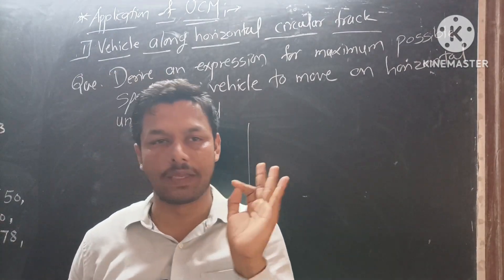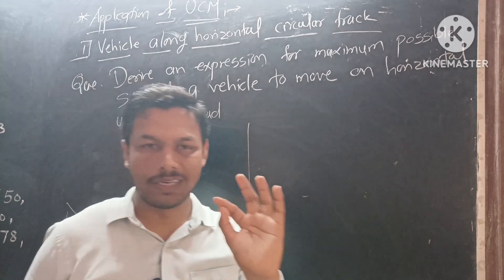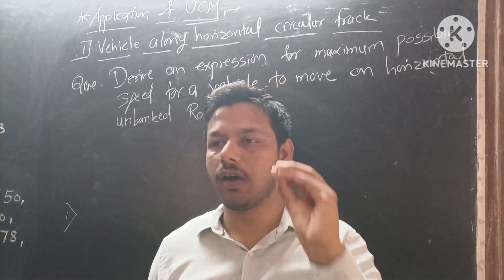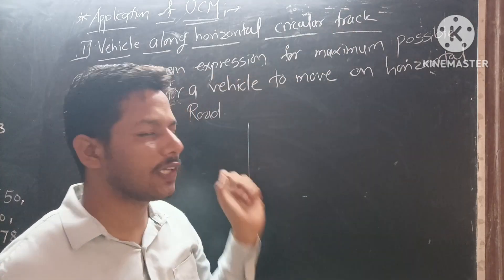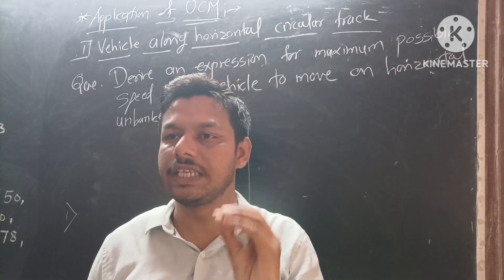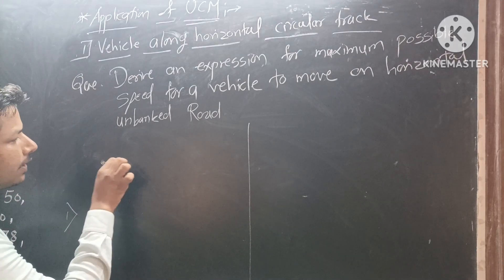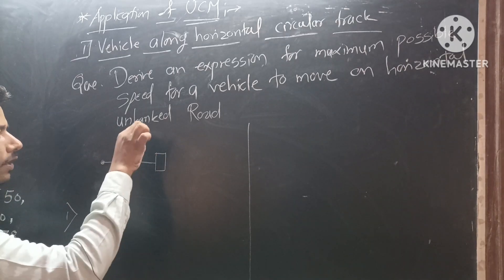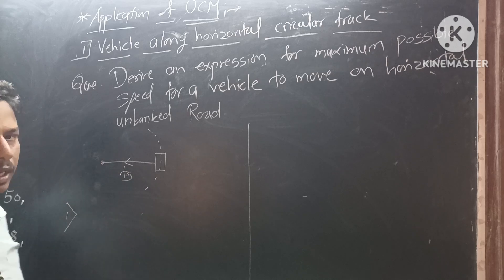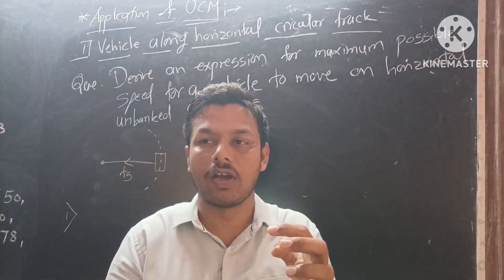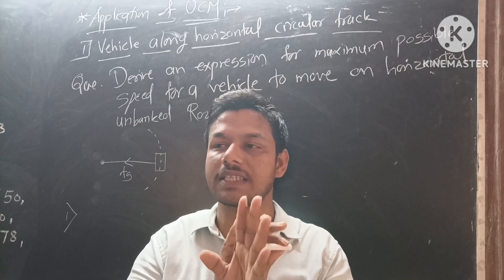Consider the vehicle moving. A vehicle moves along a horizontal circular unbanked road having mass of vehicle m. g denotes the acceleration due to gravity. Now we draw the diagram.